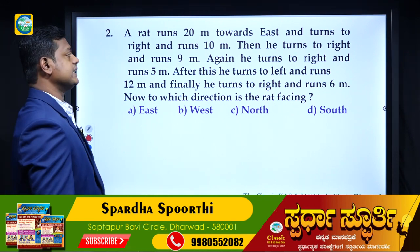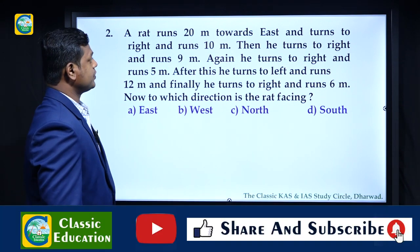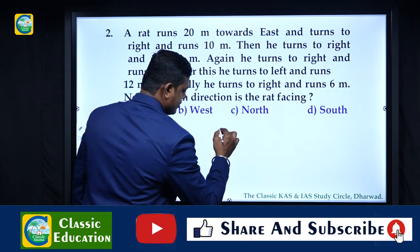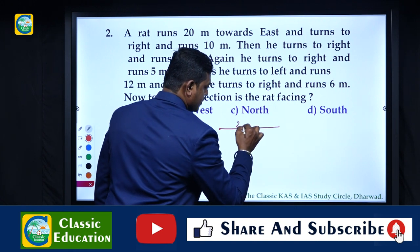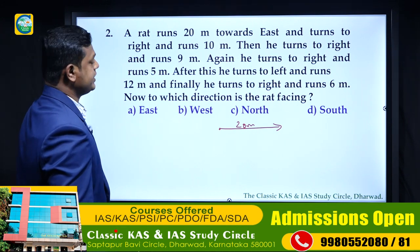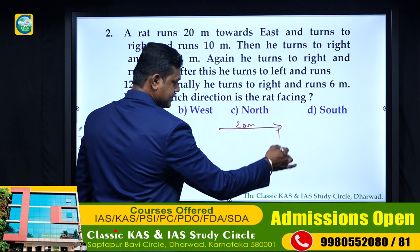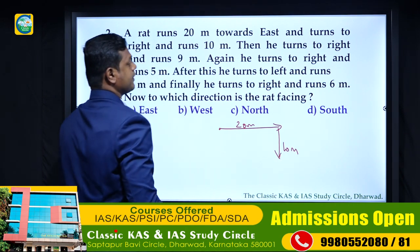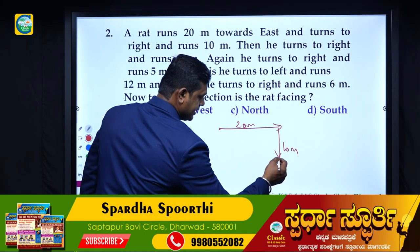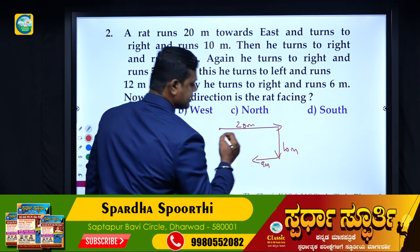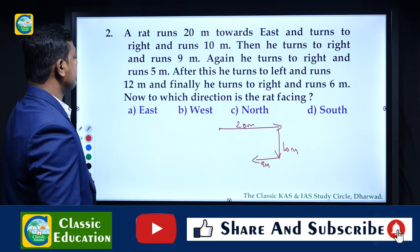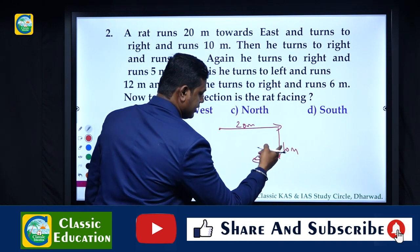Second problem: a rat runs 20 meters towards east, then turns to the right side and walks 10 meters. Then he turns right again and runs 15 meters - but since 10 meters had already been covered going down, the remaining southward distance is 9 meters after accounting for 10. Then he turns right and runs 5 meters, so remaining is now 5 meters on one side.